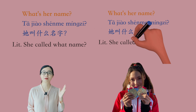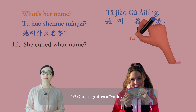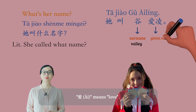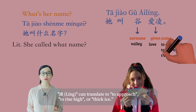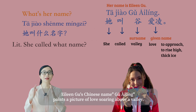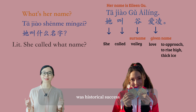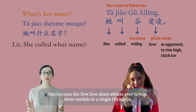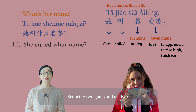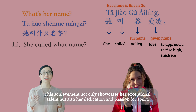她叫什么名字? 她叫谷爱凌。 谷 signifies a valley. 爱 means love. 凌 can translate to approach, to rise high, or soar. Aileen Gu's Chinese name 谷爱凌 paints a picture of love soaring above a valley. Impressively, at just 18 years old, Aileen Gu's first time at the Olympics in Beijing was a historical success. She became the first freestyle ski athlete ever to win three medals in a single Olympics, securing two golds and a silver. This achievement not only showcases her exceptional talent, but also her dedication and passion for the sport.